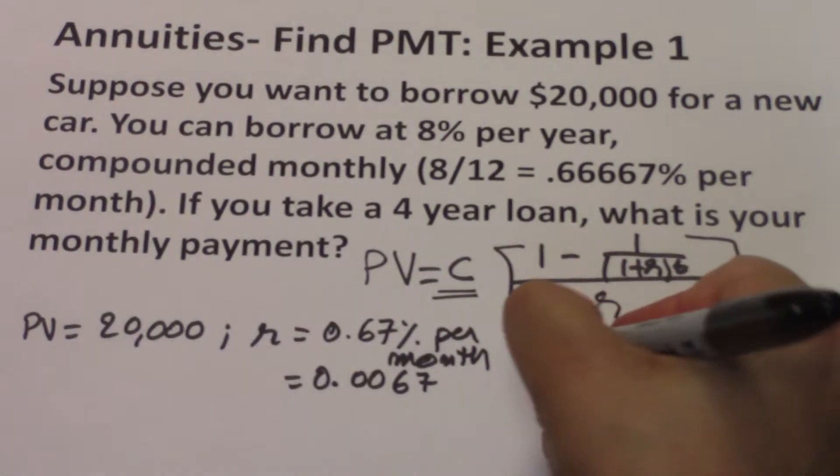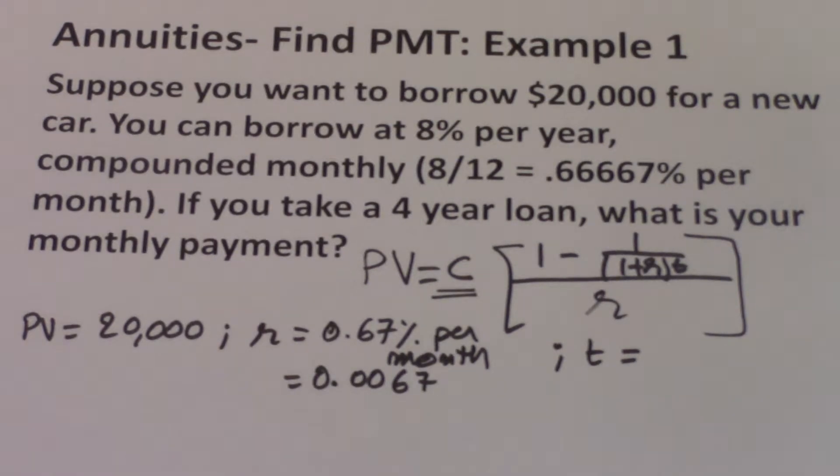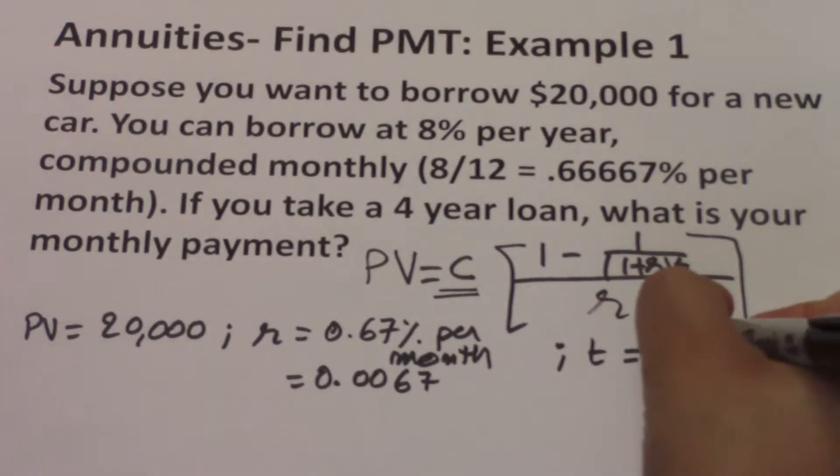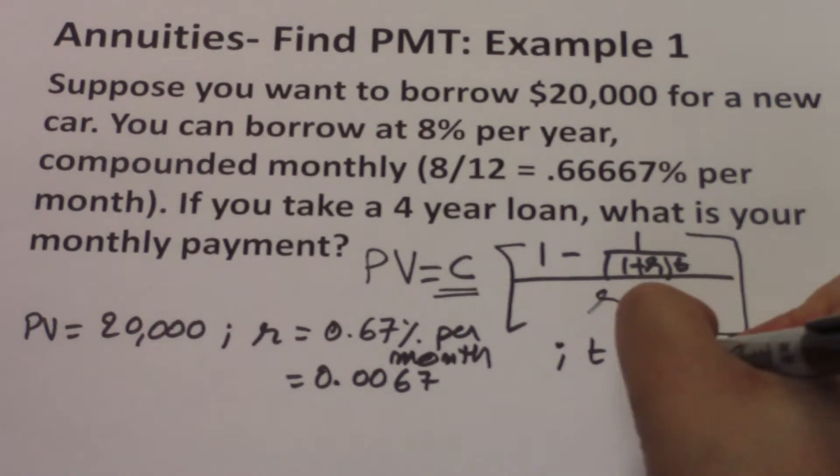The T has to also be at a monthly frequency. The loan lasts for 4 years, so you take 4 and multiply by 12 months, which gives you 48 months.